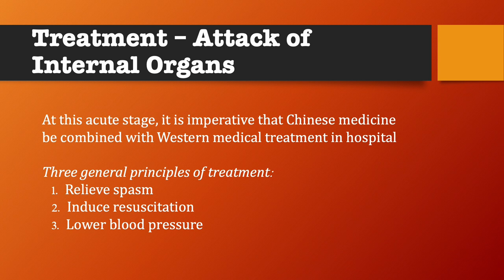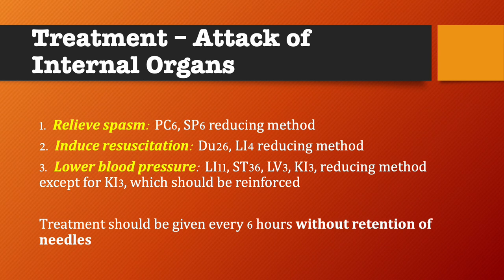Treatment for attack of internal organs: at this acute stage, it is imperative that Chinese medicine be combined with Western medical treatment in hospital. The three general principles of treatment are: relieve the spasm, induce resuscitation, and lower blood pressure. The more specific aims depend on the differentiation between the tense and flaccid types. Acupuncture points: to relieve the spasm, PC6 and Spleen 6 using reducing method. To induce resuscitation, GV26 and LI4 using reducing method. To lower the blood pressure, LI11, Stomach 36, Liver 3, and Kidney 3 with reducing method, except for Kidney 3 which should be reinforced. Treatment should be given every 6 hours without retention of needles.